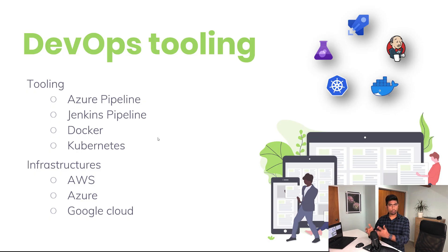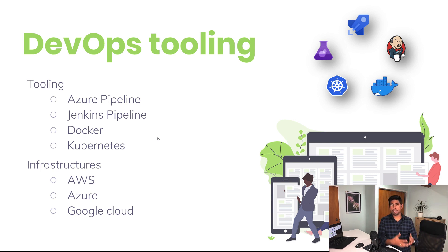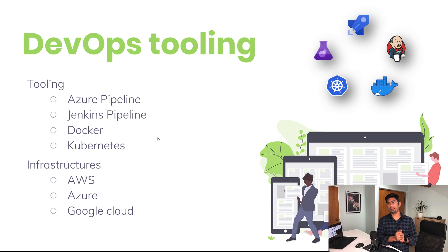There are different kinds of toolings available in DevOps — something like Azure Pipelines, Jenkins, Docker, and Kubernetes. Similarly for infrastructure, there is Azure, AWS, Google Cloud, and many different hybrid clouds available. All these infrastructures, services, and toolings play a key role in DevOps to deliver software faster and make things much smoother. And this is now not restricted just for developers or DevOps engineers.